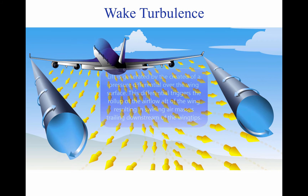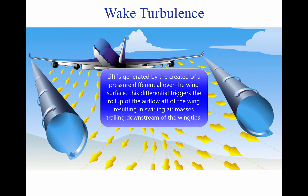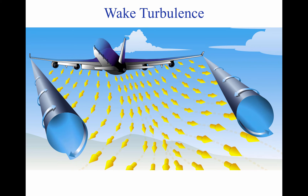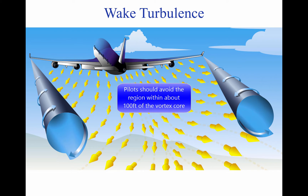Vortex generation. Lift is generated by the creation of a pressure differential over the wing surface. The lowest pressure occurs over the upper wing surface and the highest pressure under the wing. This pressure differential triggers the roll-up of the airflow aft of the wing, resulting in swirling air masses trailing downstream of the wingtips. After the roll-up is completed, the wake consists of two counter-rotating cylindrical vortices. Most of the energy is within a few feet of the center of each vortex, but pilots should avoid a region within about 100 feet of the vortex core.